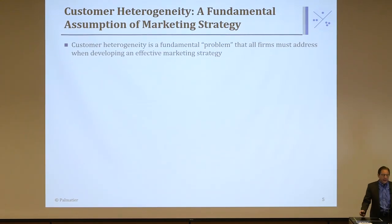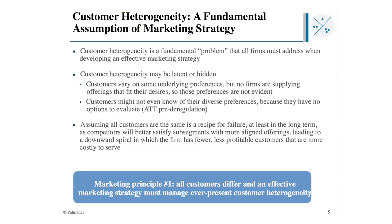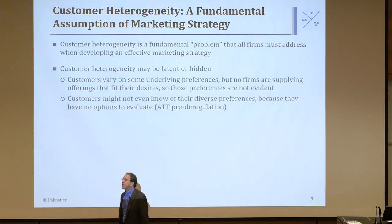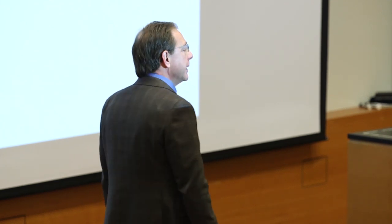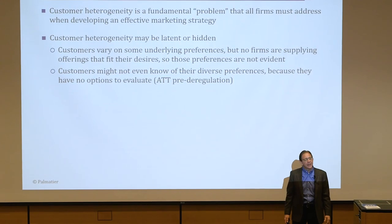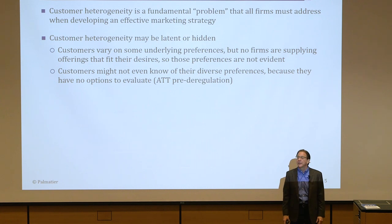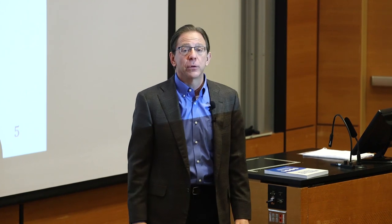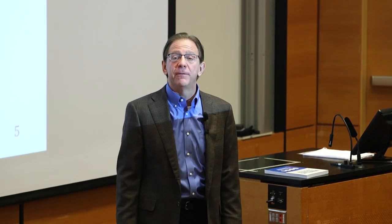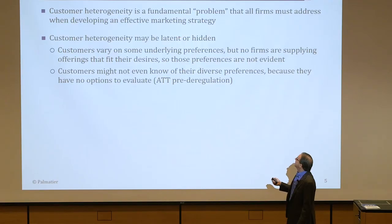Customer heterogeneity is a fundamental problem all firms must address — you can't launch one product to the whole market. But sometimes that heterogeneity may be latent or hidden. You might look at a market and see only one product being sold and conclude there's no variation. I would argue the variation exists — nobody has yet found or uncovered what those variants are. AT&T is a good example: at one time they were a monopoly in the U.S. selling one type of phone — black — the only color they offered.